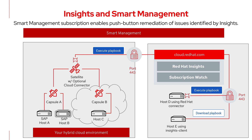Click that Execute Remediation button and the playbook is sent to satellite and run. If you have a host connected using Red Hat Connector, that also configures Cloud Connector and you have that same Execute Remediation button. However, if you have a host connected with Subscription Manager and the Insights client, you do not have Cloud Connector and you only have the ability to download the playbook. In that instance, you're responsible for running the playbook using whatever method you prefer, while Smart Management handles that step for you in the other examples.